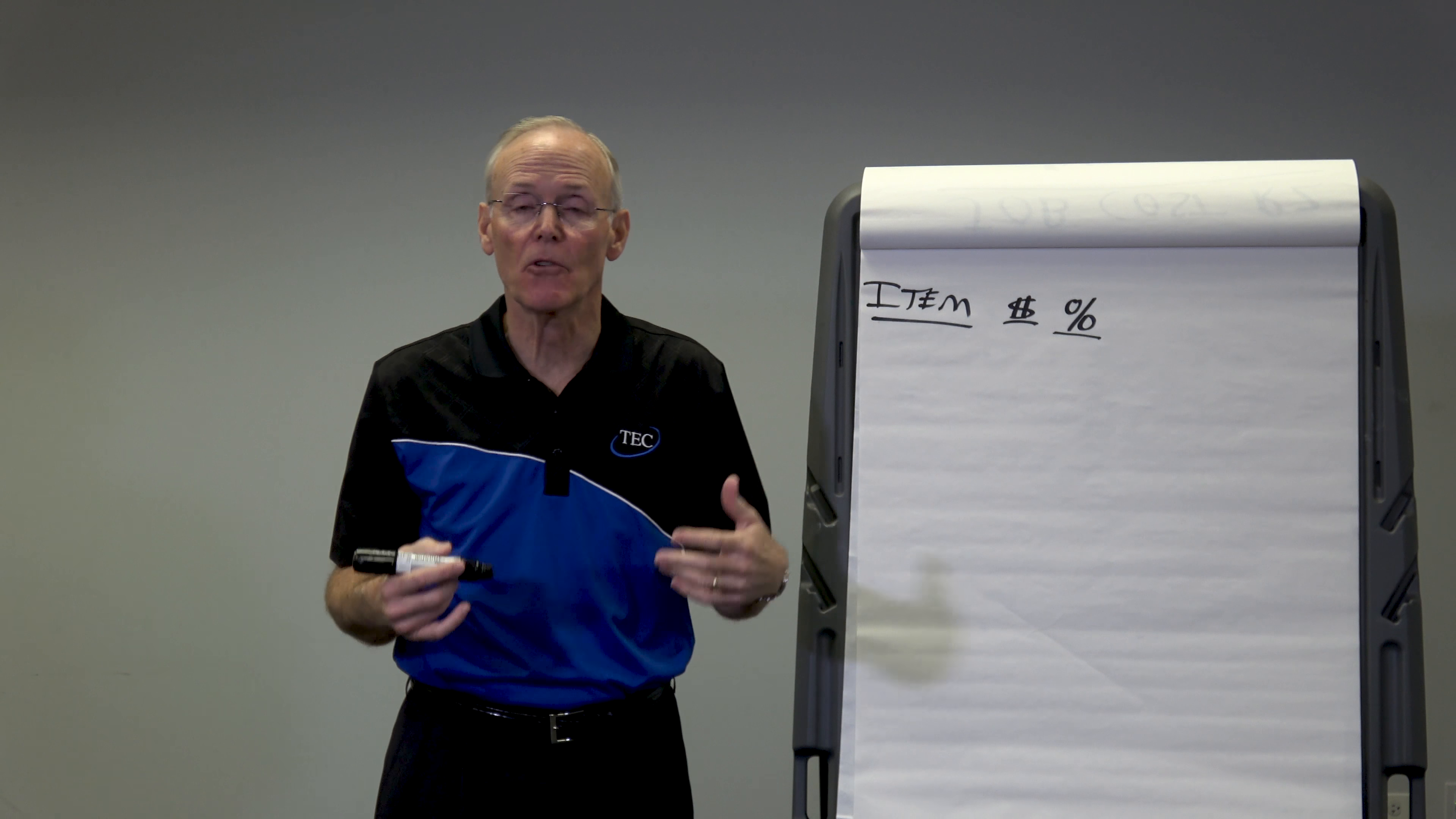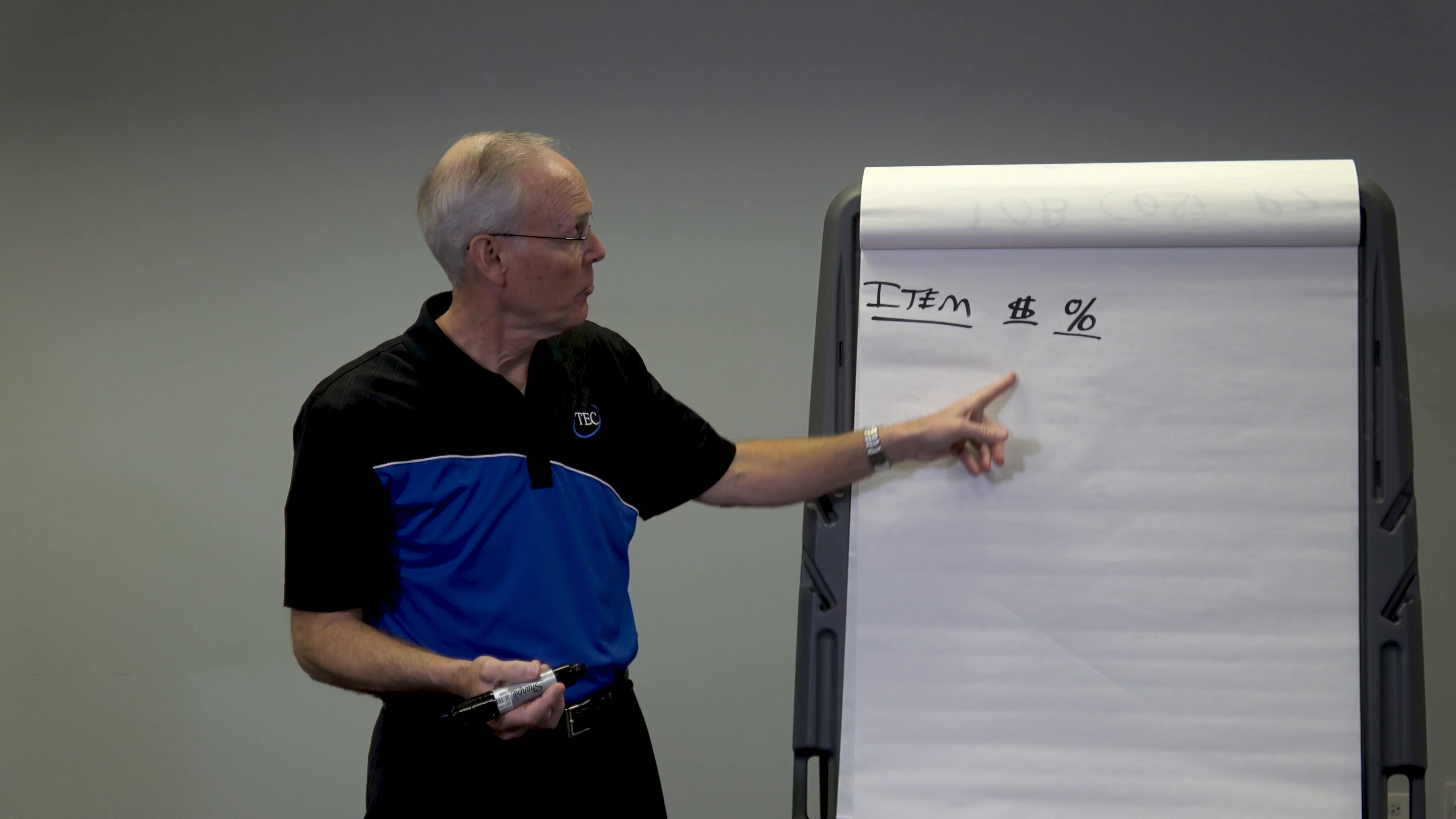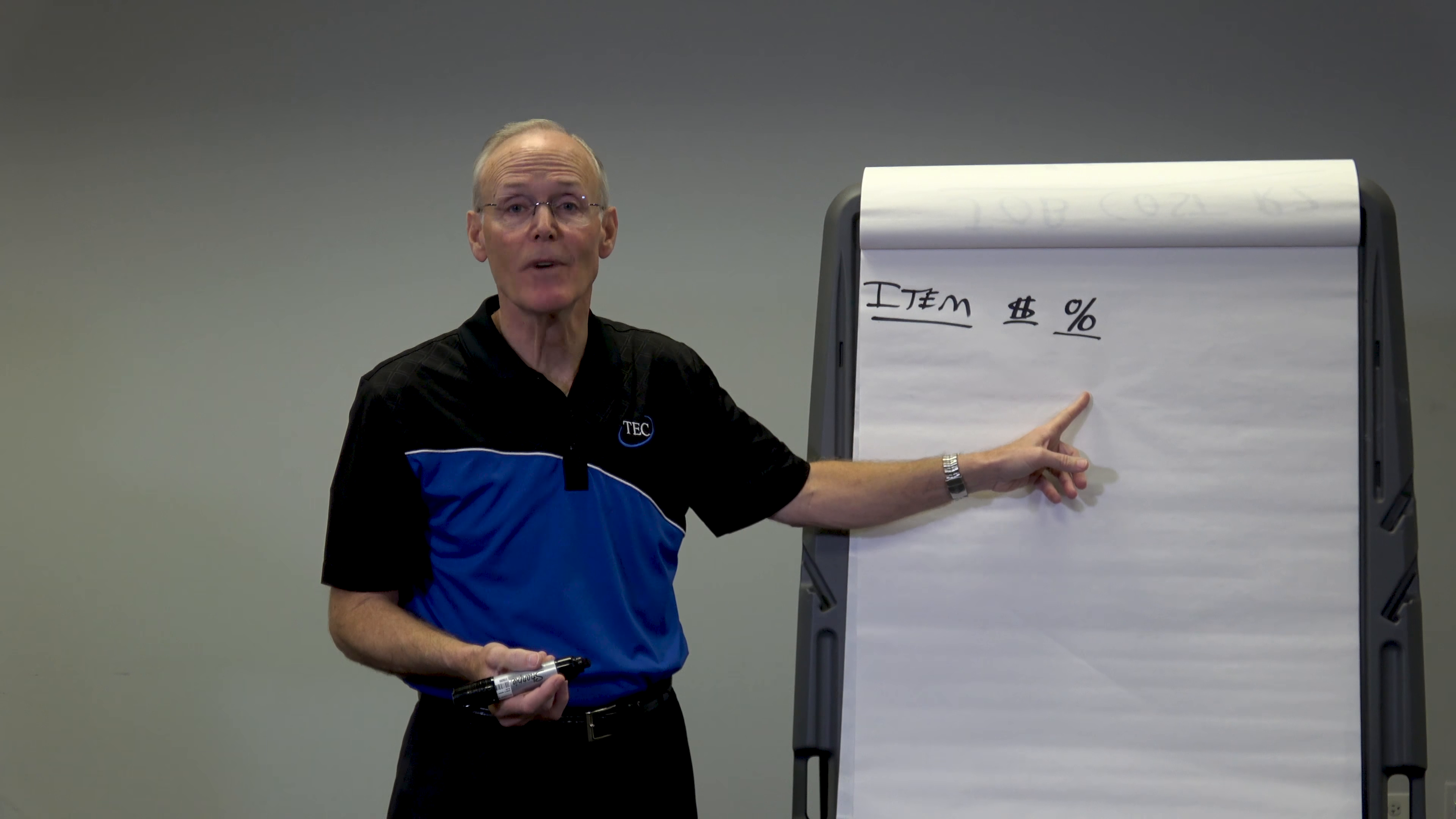You hear people talking about gross profit, gross margin, net profit, net margin. Gross profit is a dollar amount. Net profit is a dollar amount. The margin is the ratio.